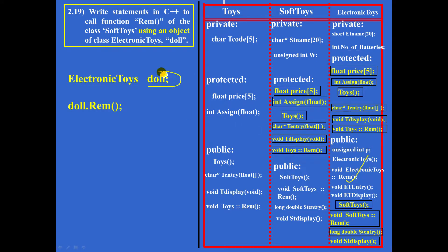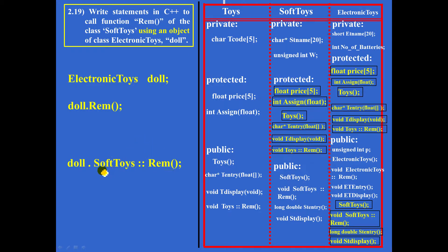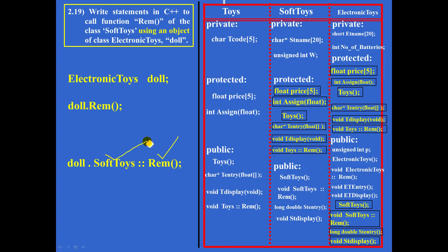The question is: using doll, how can you call remarks of the class soft toys? The method is that the full name of the function must be written — that is, class name followed by scope resolution operator followed by function name. So if I write object name dot, then class name followed by scope resolution operator followed by function name, then remarks of class soft toys will be called.